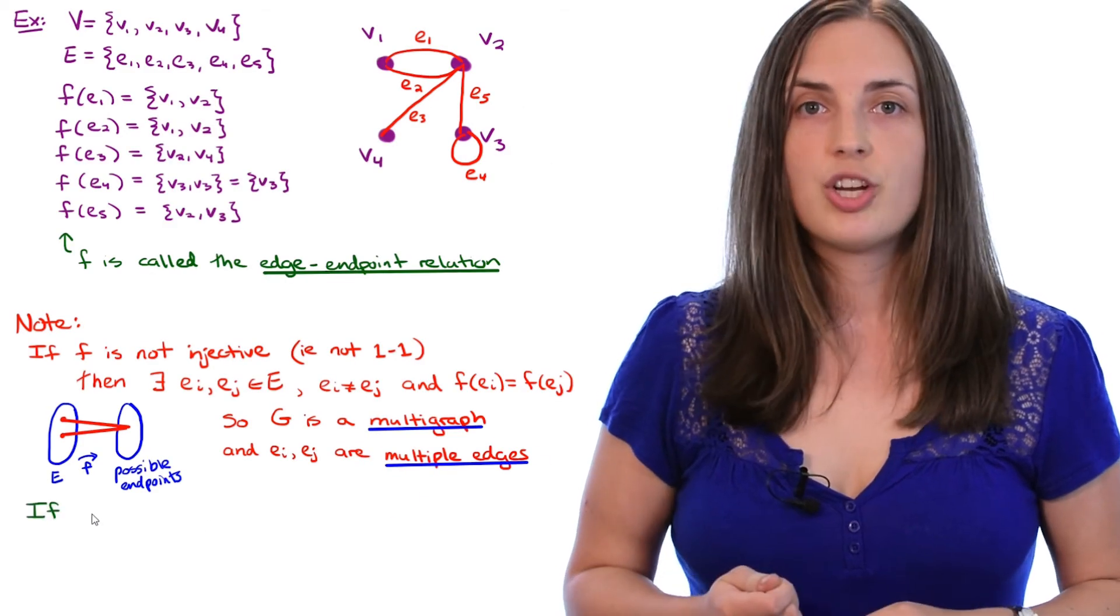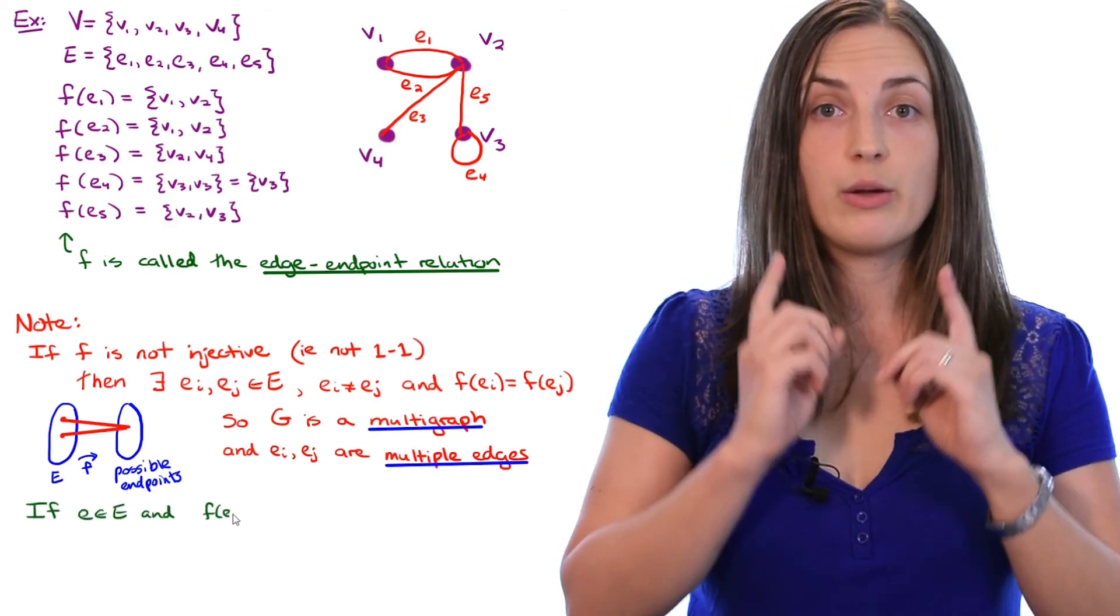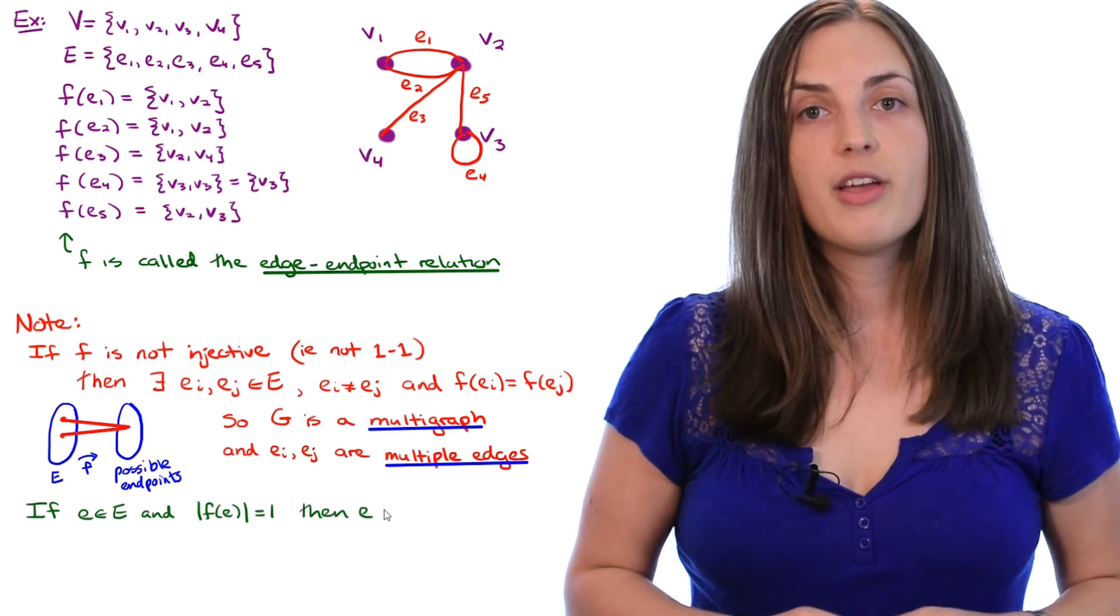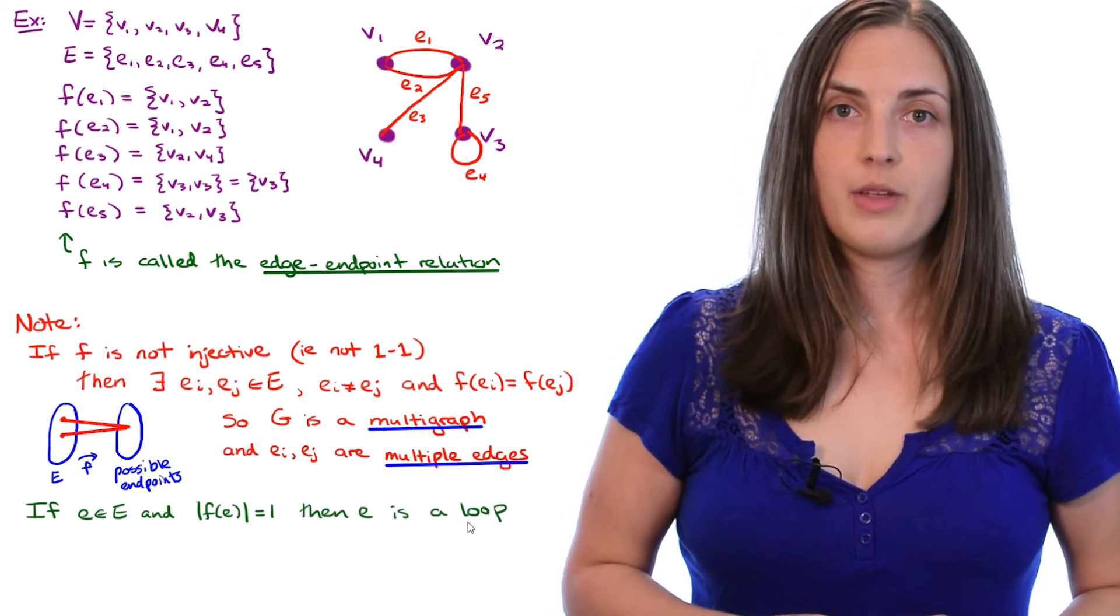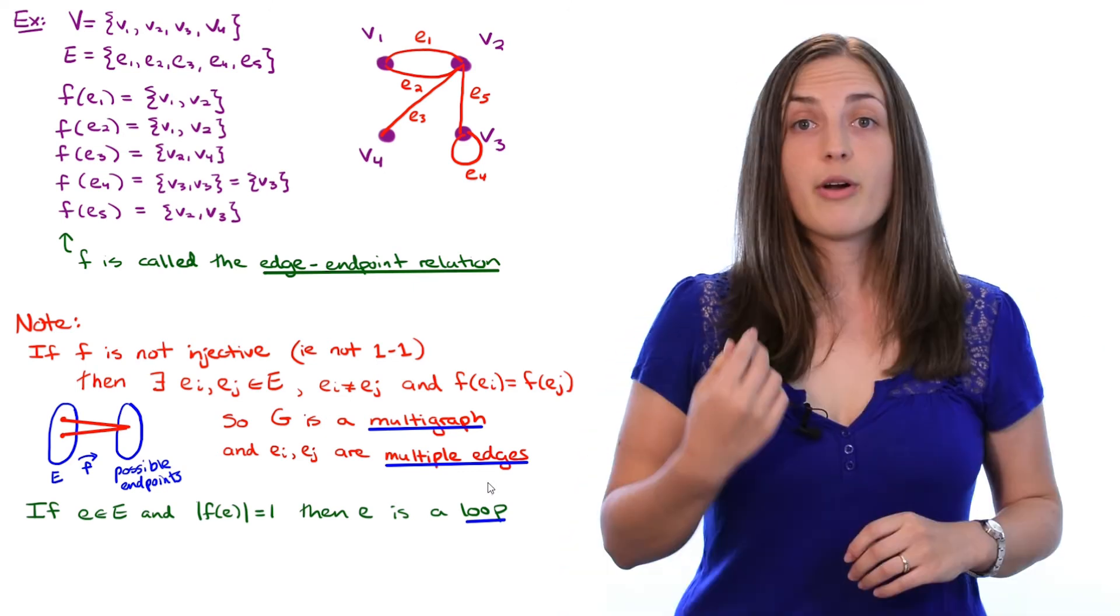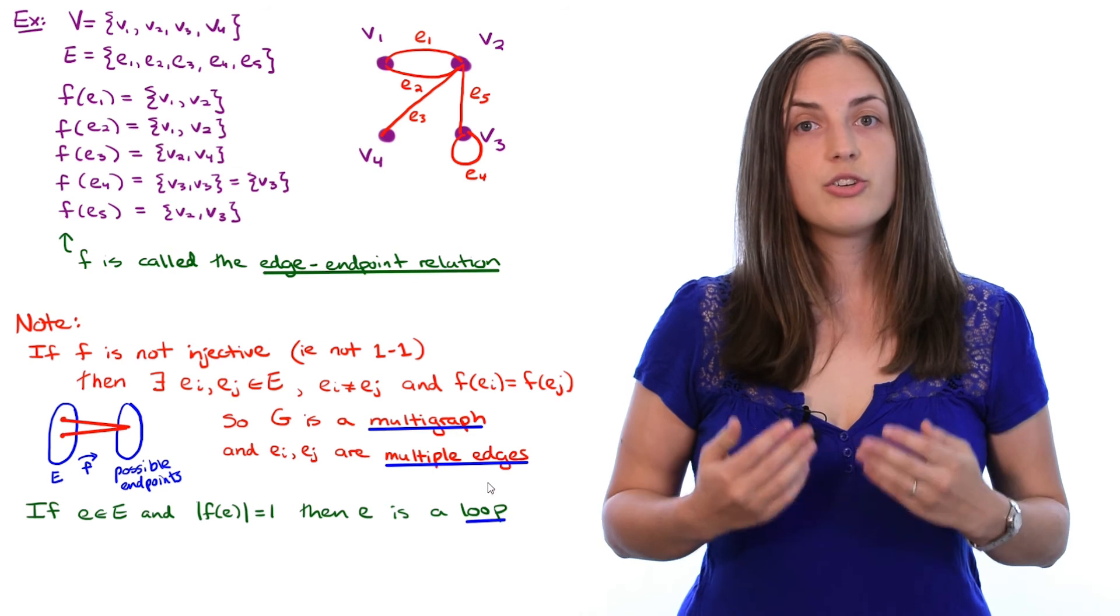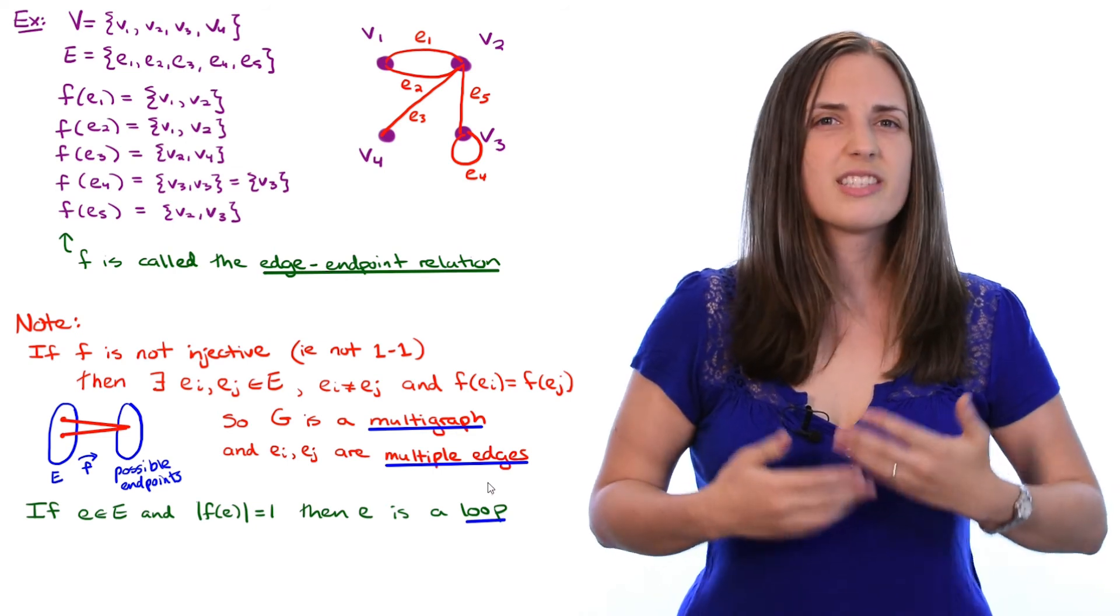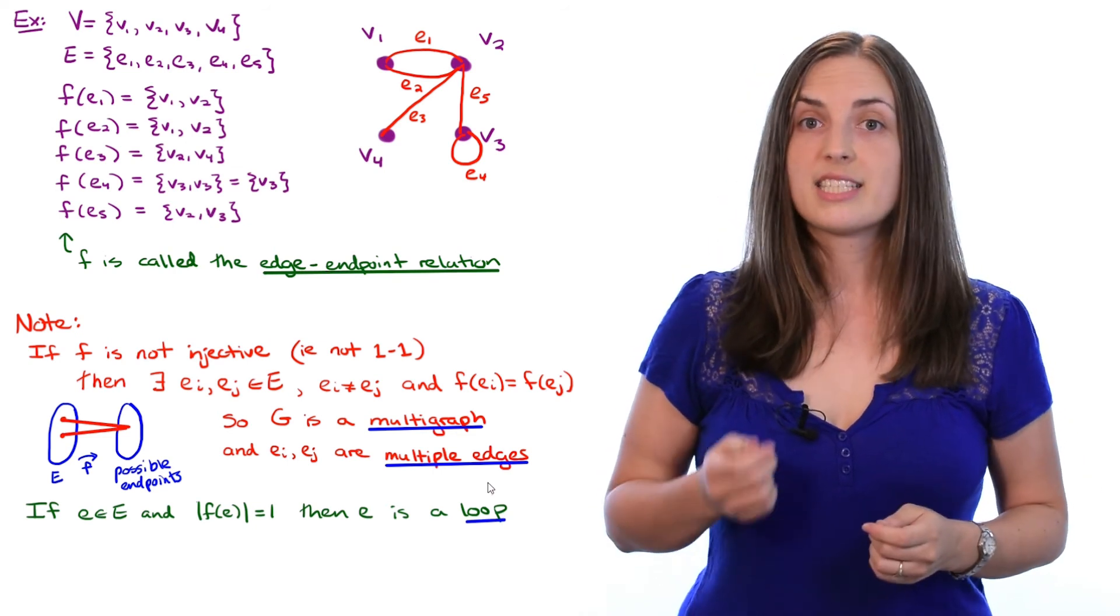If E is an edge which gets mapped to only one thing under the mapping F, then that edge is called a loop. If either a loop or multiple edge occurs in the graph, then that graph is not simple. Throughout the videos on this channel, I will usually assume that the graphs G are simple graphs, unless I explicitly say otherwise. So the straightforward definition will usually suffice.